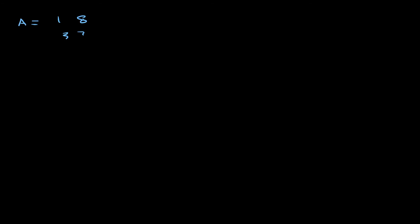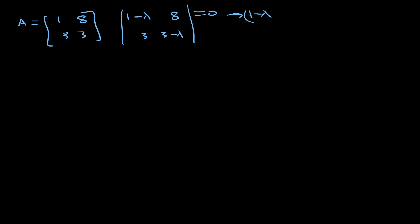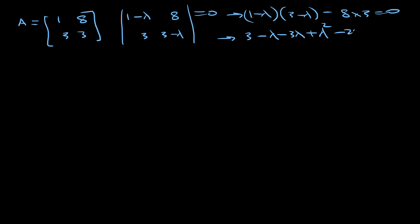Let's do another example. A is now equal to 1, 8, 3, 3. To find the eigenvalues, same as before: 1 minus lambda, 8, 3, 3 minus lambda, and the determinant equals 0. So 1 minus lambda times 3 minus lambda minus 8 times 3 equals 0. This gives 3 minus lambda minus 3 lambda plus lambda squared minus 24 equals 0.